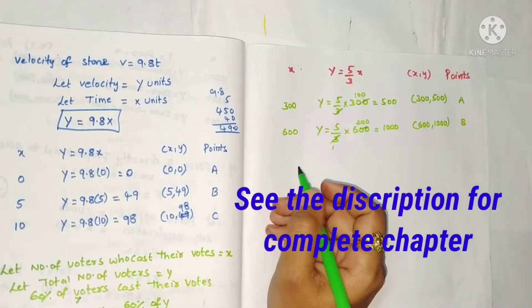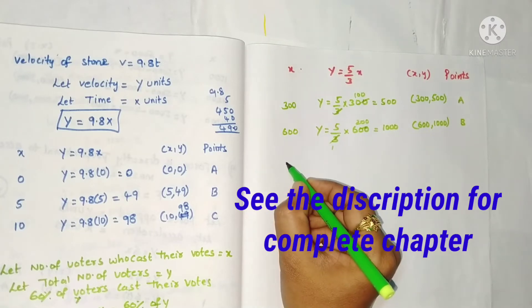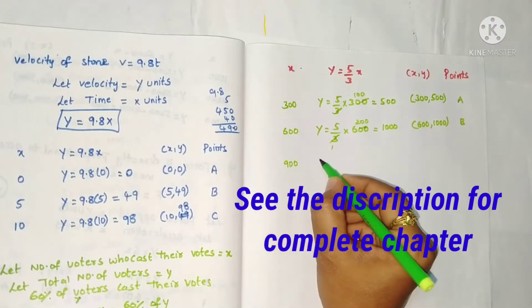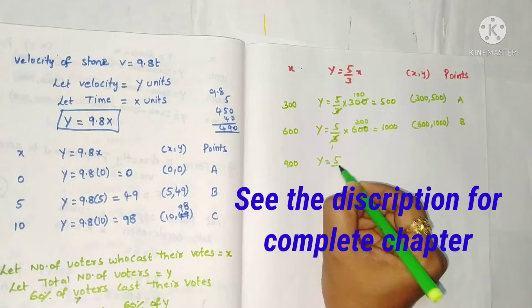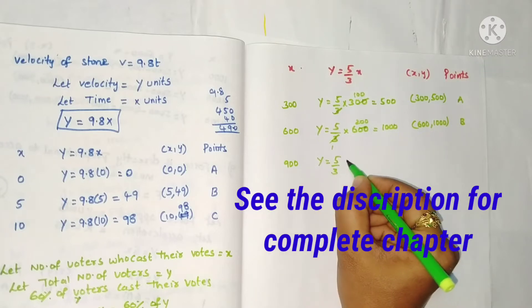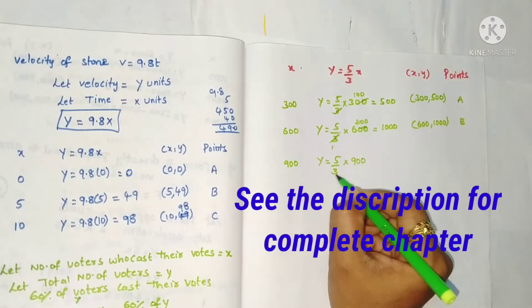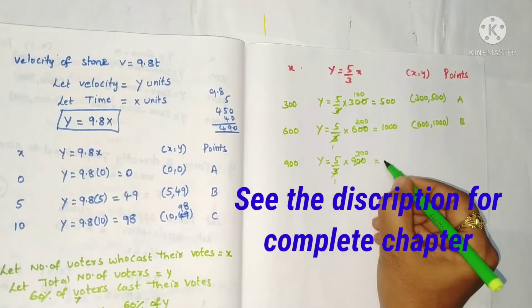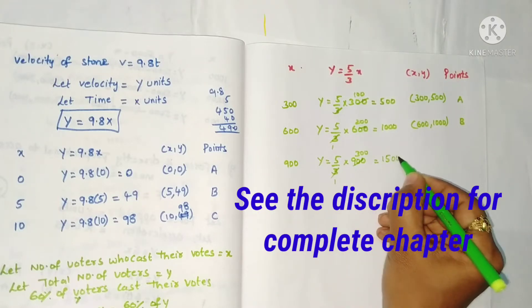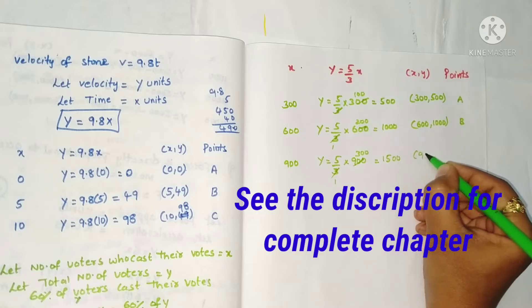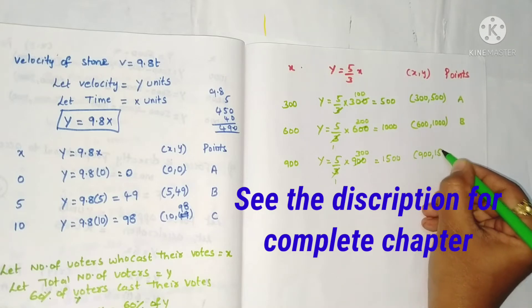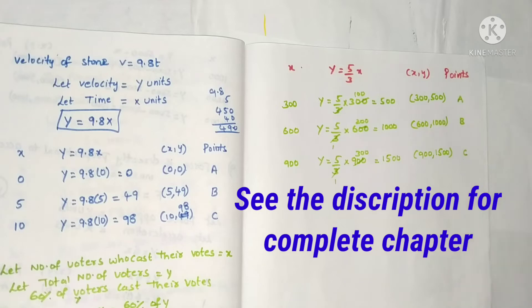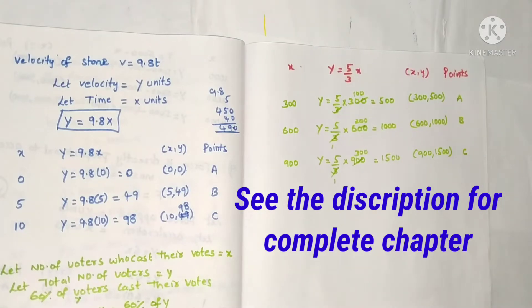Next, take x as 900. y equals 5/3 × 900 = 1500. So the third point is (900, 1500), which is point C.